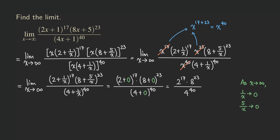Now, 8 is a power of 2 and 4 is also a power of 2, so we can write everything in terms of powers of 2. We get 2^17 times (2^3)^23 in the numerator, and (2^2)^40 in the denominator. Using rules of exponents, (2^3)^23 = 2^69, and (2^2)^40 = 2^80.